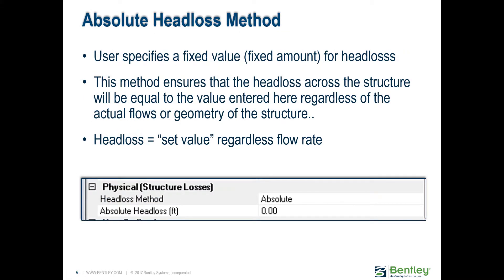The absolute head loss method simply says: at this structure, I know I lose one foot of energy, for example. The problem with the absolute head loss method is that regardless of the flow, the head loss would be the same. So if you have very little flow and you put in something like one foot, it's going to subtract that one foot of energy at that location and it might not be representative. In reality, the more flow you have, the more head losses.